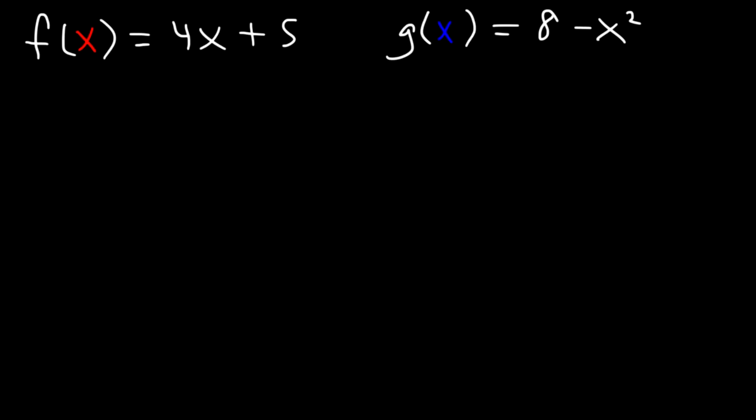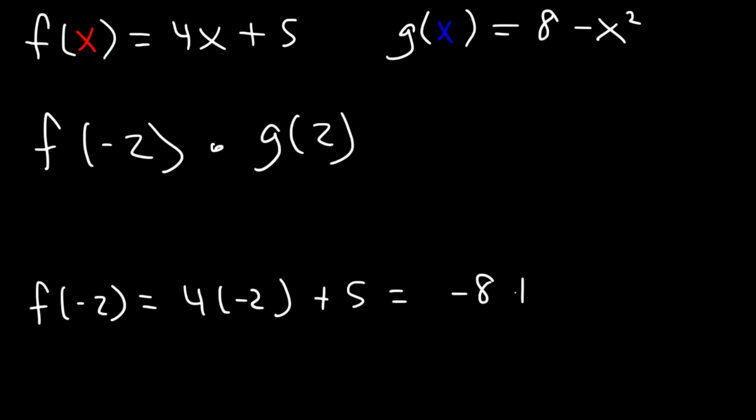So what is f of negative 2 multiplied by g of 2? Let's do it separately. Let's find f of negative 2 first, using this formula. So it's going to be 4 times negative 2 plus 5, which is negative 8 plus 5, and so that's negative 3. Now let's calculate g of 2, using this equation. So that's 8 minus 2 squared. 2 squared is 4. 8 minus 4 is 4.